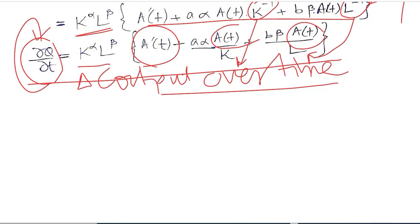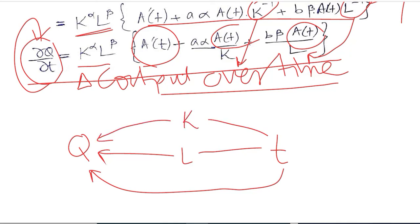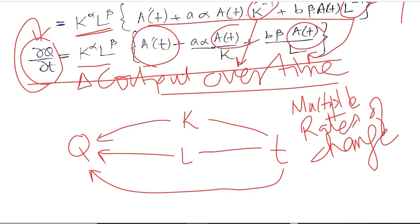We can make a flow chart just to remind ourselves that how the output is affected. This is the output. Time is affecting output directly, as well as it is affecting labor which then is contributing to output. And it is also affecting capital which then is contributing to the output. So due to this, we have multiple rates of change.